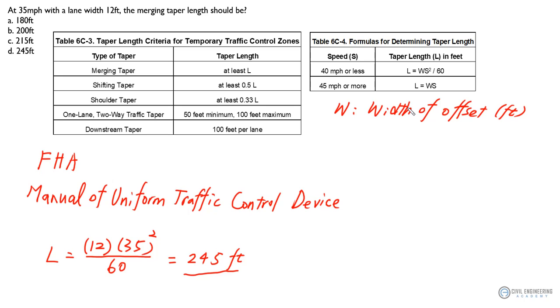Alright, so when we're talking about taper length, there are actually different types of tapers. We usually go to this manual, Manual of Uniform Traffic Control Device, which is a manual provided by Federal Highway Administration. In Chapter 6, in Table 6C-3, there's a taper length criteria for temporary traffic control zones.